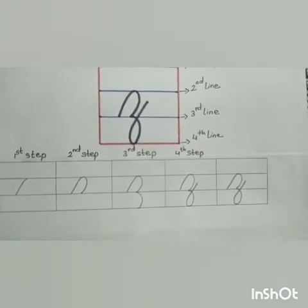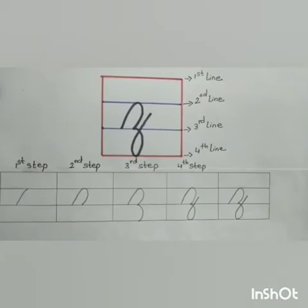Okay? So, children, today we have learnt to write small cursive f and small cursive z within 4 lines. Keep practicing the same. Thank you. Stay safe. Stay healthy.